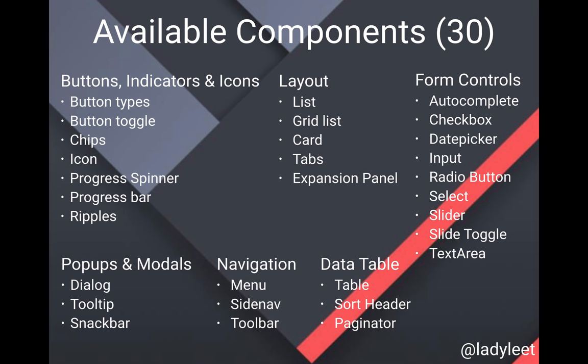Here are the available components in Angular Material. A few key ones to note would be the Date Picker, which has been a long time coming. The data table is also very popular — really exciting that they recently launched that. A few of my favorites are the Progress Bar and Progress Spinner, and who doesn't love the beautiful buttons that Material Design gives you? I really love them with a nice little ripple effect.